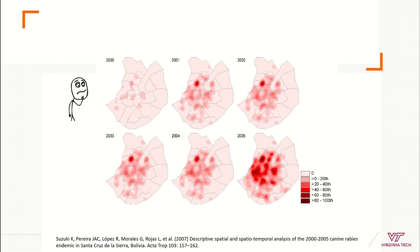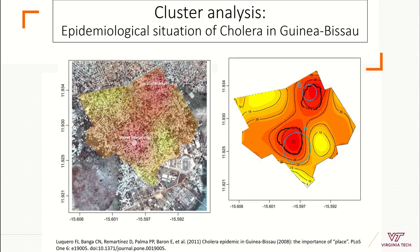One concern is that maybe in the early 2000s we had less surveillance, and now we have better surveillance. Maybe we have more data because we are doing better research, and actually maybe things are not changing — what is changing is just our effort to do better research. This is another example, with cholera.